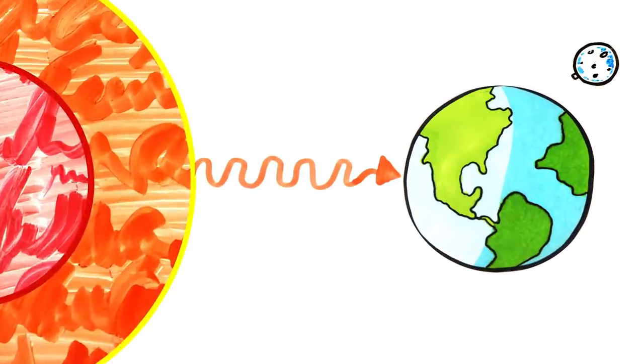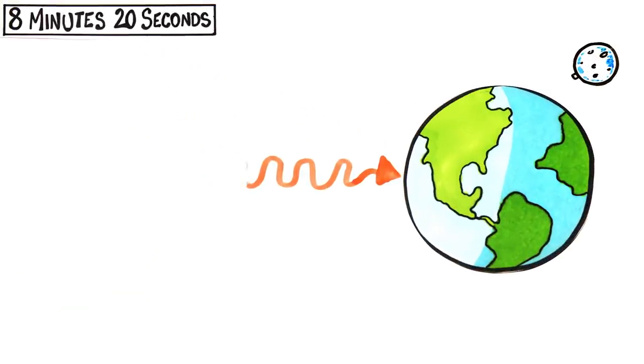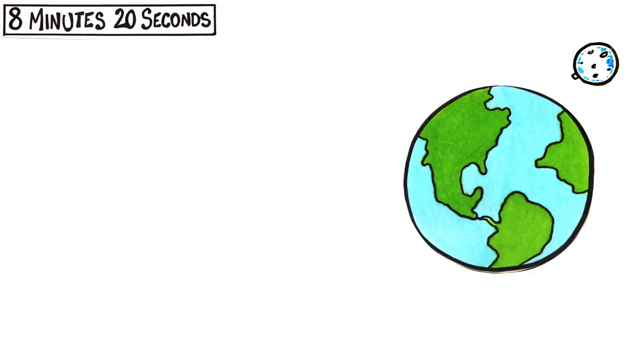Now, after the sun disappears, for the first 8 minutes and 20 seconds, we'd all be completely oblivious, as that's how long it takes the sun's light to hit Earth. Of course, if it was nighttime where you live, the moon would suddenly disappear, as its brightness is simply a reflection of the sun's light.